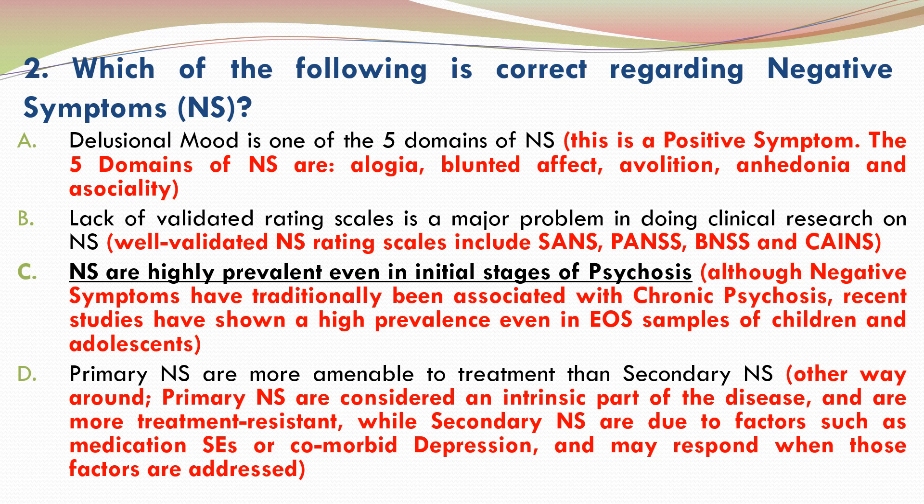B is incorrect because there are well-validated rating scales for assessing negative symptoms. D is incorrect because secondary negative symptoms are more amenable to treatment than primary negative symptoms. Primary negative symptoms are considered an intrinsic part of the disease and are more treatment resistant, while secondary negative symptoms are due to factors such as medication side effects or comorbid depression, and may respond when those factors are addressed.